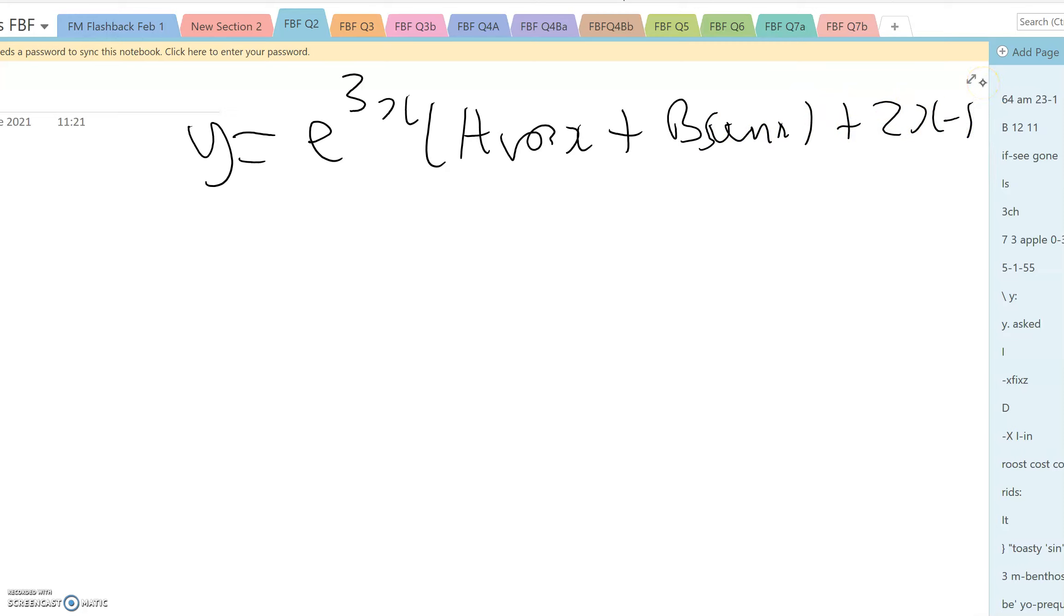Using the boundary condition that x is 0, y is 3. We get 3 equals 1 times a times 1 plus 0 and then another 0 and minus 1 and that reduces to a equals 4.